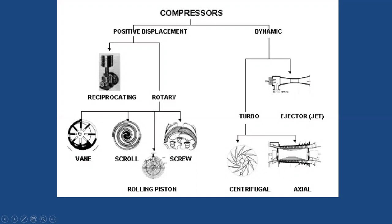Turbo machines are further classified into centrifugal compressors and axial compressors. Axial compressors are mainly used in specific applications like aircraft refrigeration. For day-to-day ground-level applications, as far as rotodynamic compressors are concerned, the centrifugal compressor is generally used.